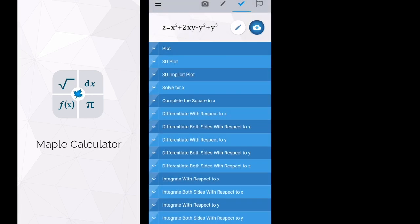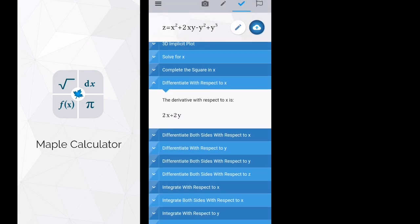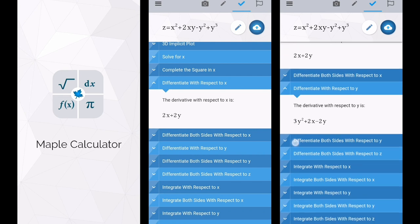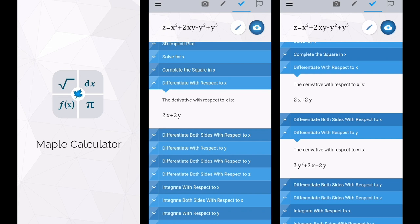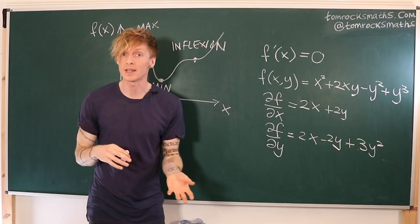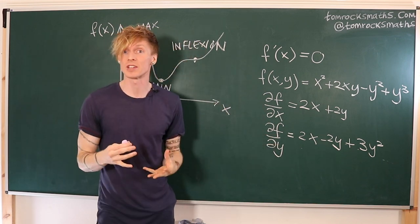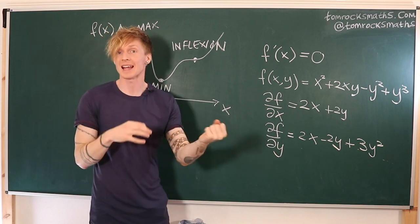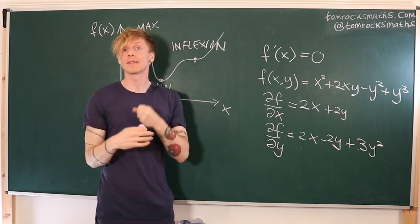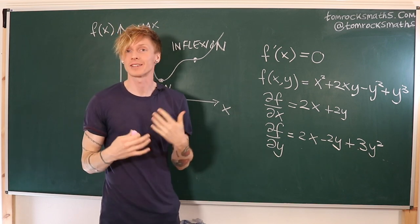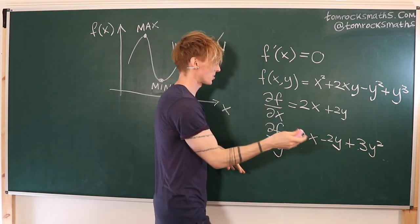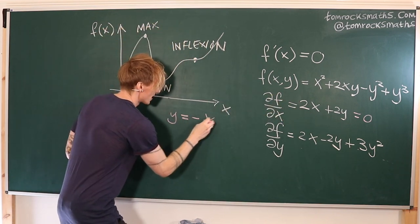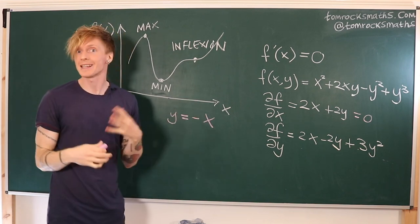Don't worry if you weren't able to follow those steps because the Maple Calculator app will actually give you the partial derivatives automatically when you enter your equation. You simply select x derivative and y derivative from the options and it will give you the results. Now we said that at a critical point both of these derivatives have to be zero. So we have a set of simultaneous equations — two equations in the two variables x and y — which we need to solve to find the xy coordinates of our critical points. The first equation 2x plus 2y equals 0 gives us y equals minus x.